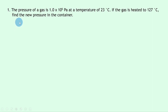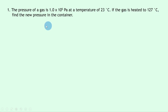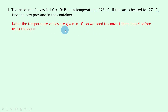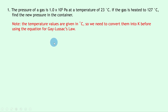So let's get started. Question 1 says that the pressure of a gas is 1.0 times 10 to the 5 pascals at a temperature of 23 degrees Celsius. If the gas is heated to 127 degrees Celsius, find the new pressure in the container. You should note that the temperature values are given in degrees Celsius, so we need to convert them into Kelvin before using the equation for Gay-Lussac's law.